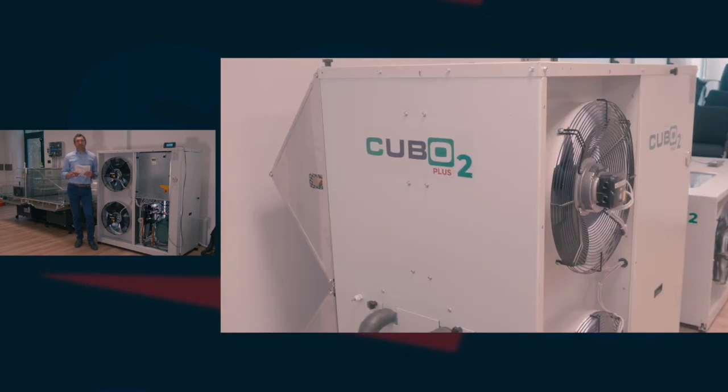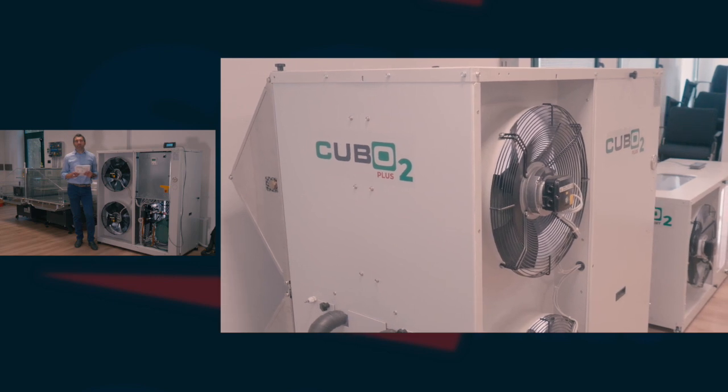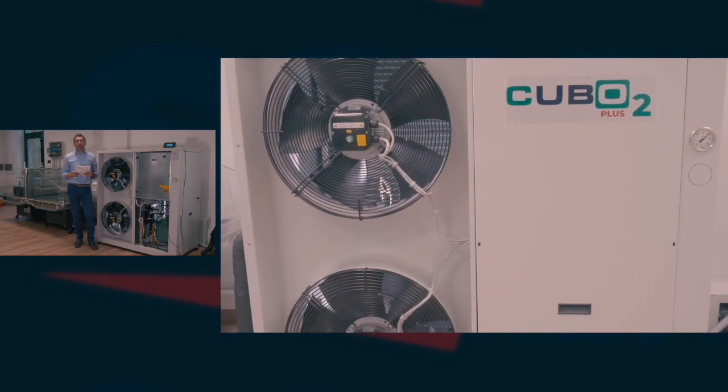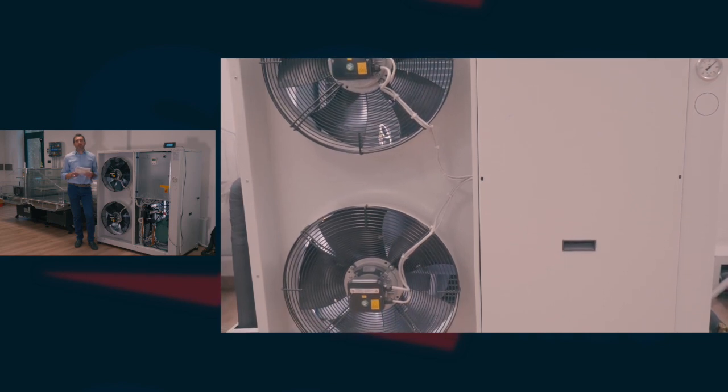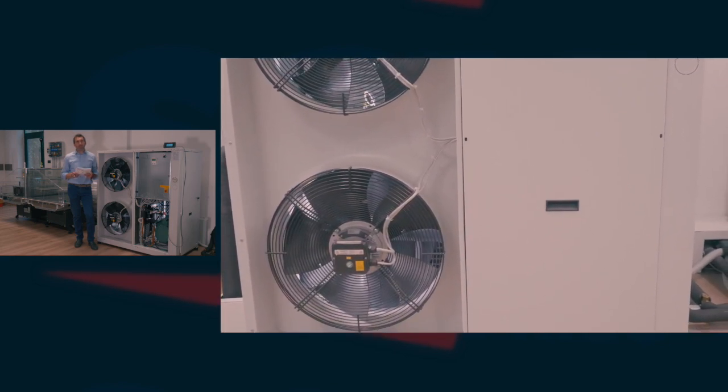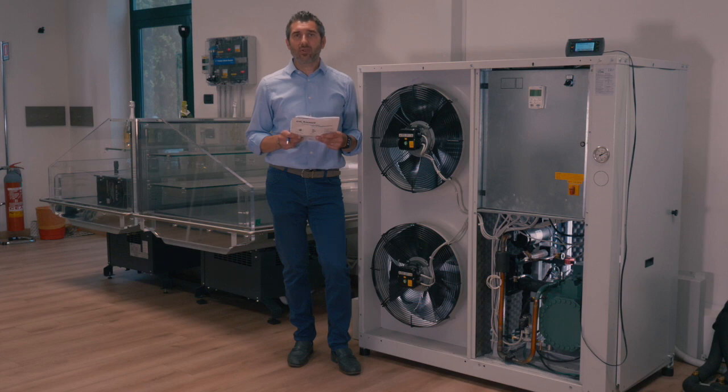The control of this condensing unit is a PR100T P-RAC, specially designed to manage trans-critical CO2 systems and condensing units. The inverter used for compressor modulation is an ABB inverter.